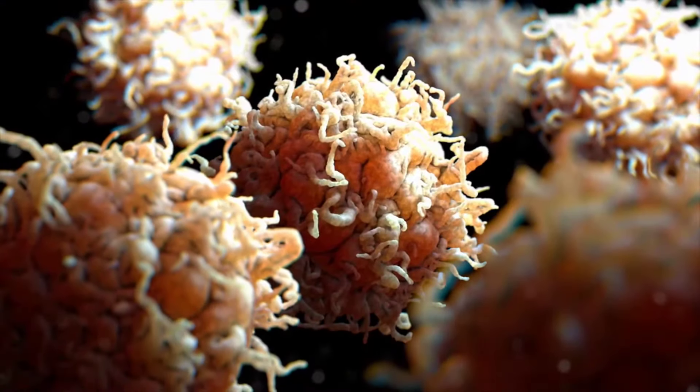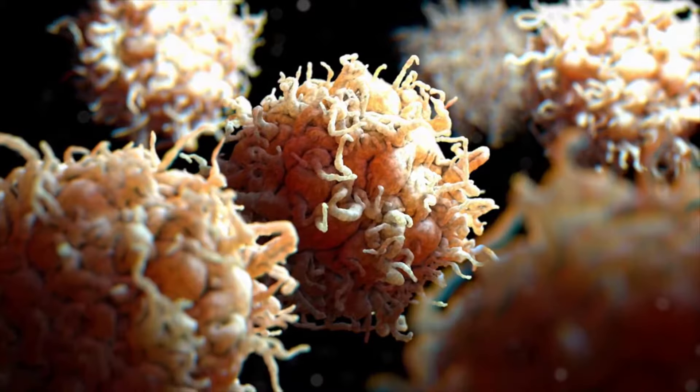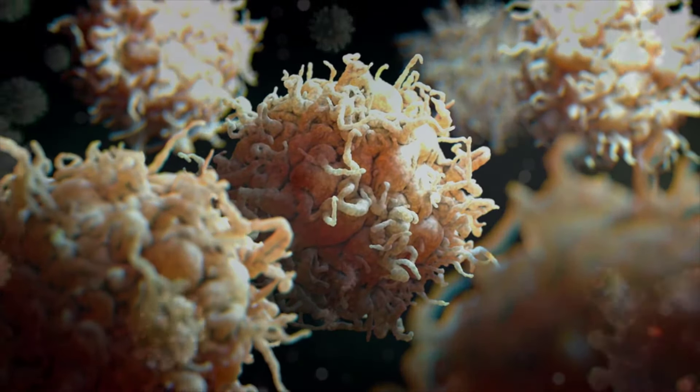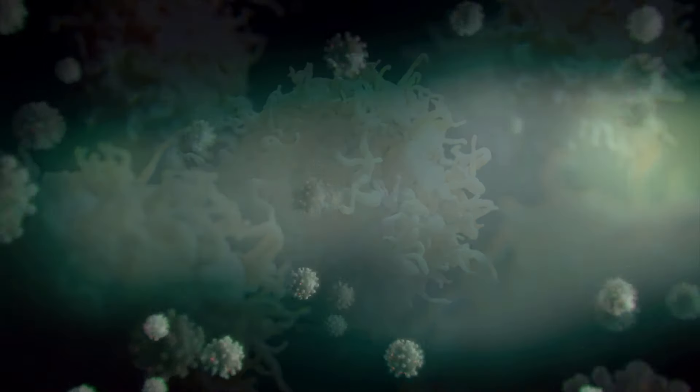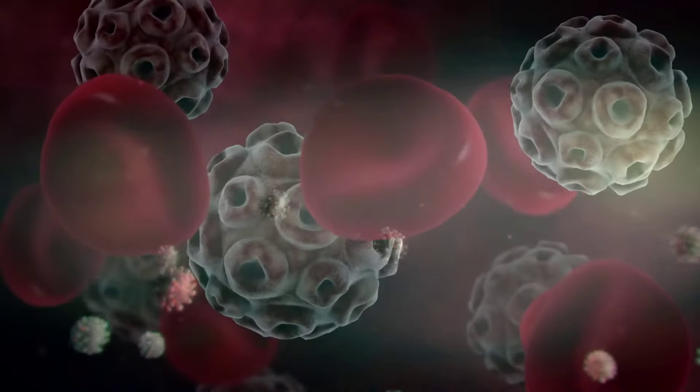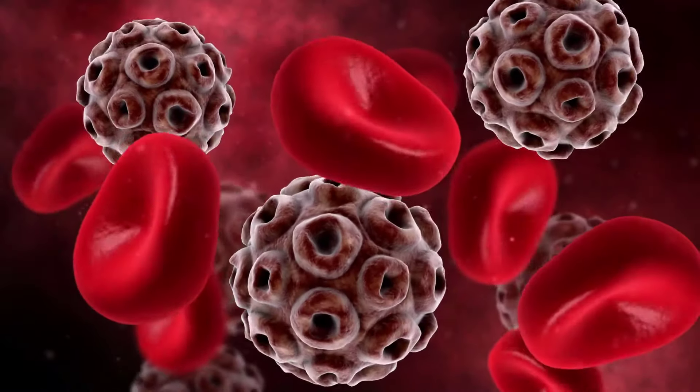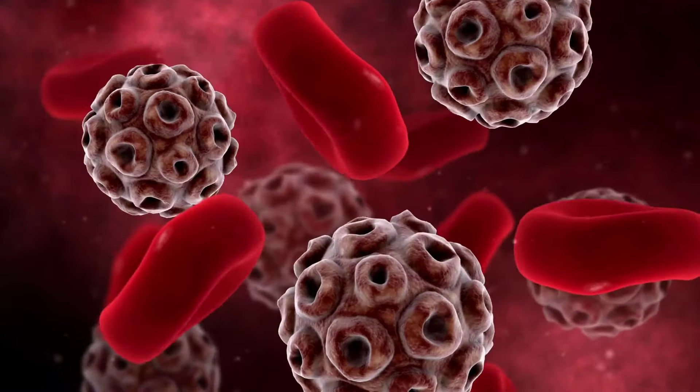In response to injury, mast cells present in the tissues degranulate and release histamines. Histamines are potent vasodilators. They increase blood flow and recruit white blood cells to the site of inflammation.